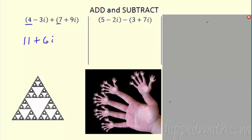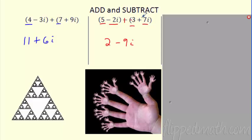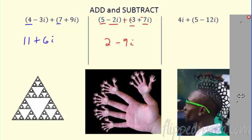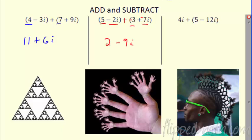Here's another example. For subtraction, you're subtracting each part: five minus three, and then negative 2i minus 7i — going more negative gives minus 9i. You can distribute the negative and write plus then make it minus if that's easier. The parentheses are just there to show it's a complex number — they're not really needed.